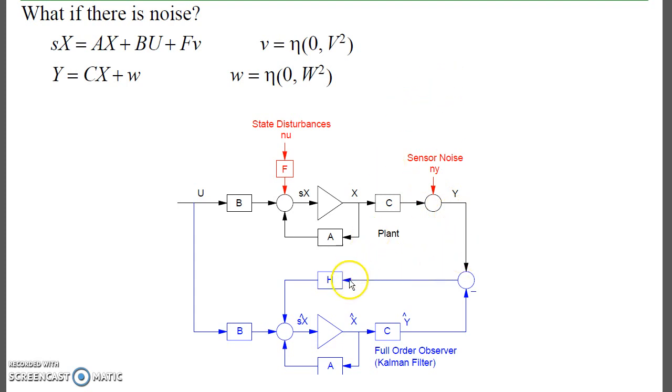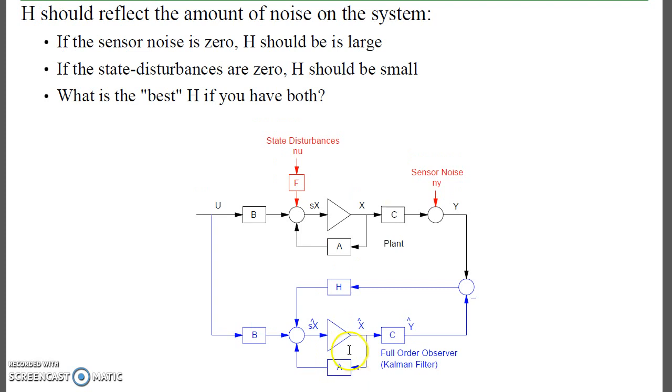How do I find H in that case? In this case, H isn't arbitrary. If I have a lot of disturbances at the input, what I want to do is base the dynamics, my estimate of the dynamics, based upon the outputs. I want H to be large. Because if I have good measurements, I can tell you what the states are. And I'll force H to follow the output, regardless of the input disturbances.